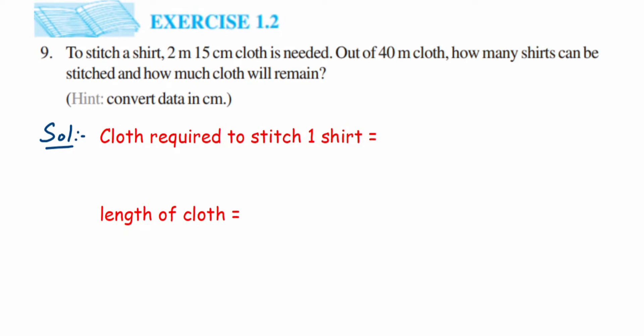Here's question 9 from exercise 1.2 from the 'Knowing Numbers' chapter of class X. The question is: to stitch a shirt, 2 meters 15 centimeters of cloth is needed. Out of 40 meters of cloth, how many shirts can be stitched and how much cloth will remain? They have given that the cloth required to stitch one shirt is 2 meters 15 centimeters, and there is a total of 40 meters of cloth.